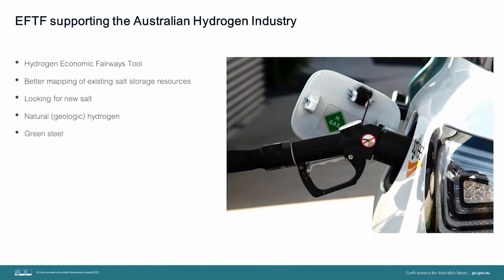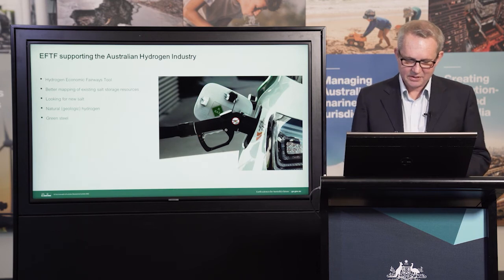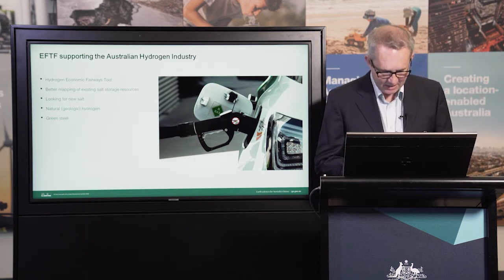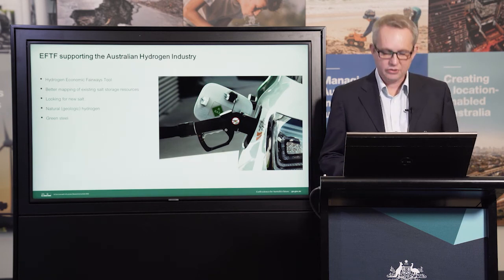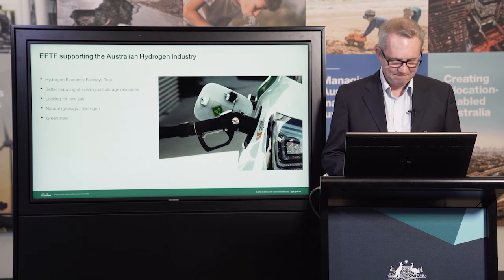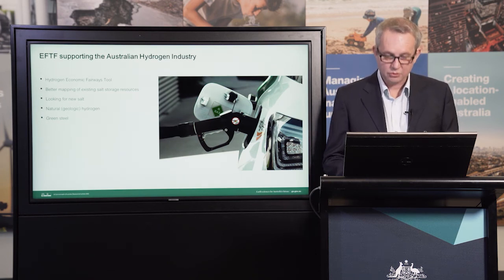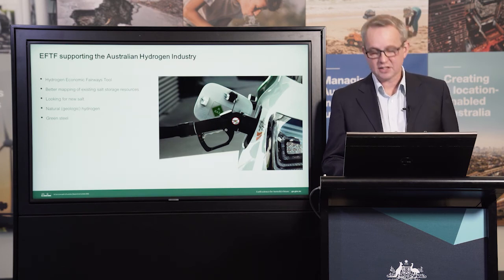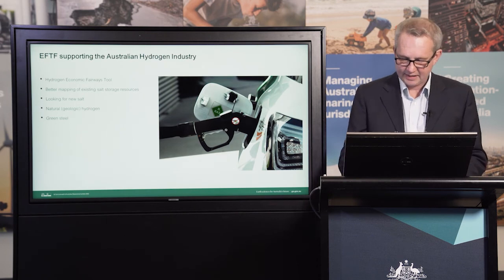These areas include geospatial economic analysis through our hydrogen economic fairways tool, better mapping of underground salt resources and looking for new ones — salt is key for large-scale underground hydrogen storage. We are also interested in natural or geologic hydrogen, a potentially cheaper source of hydrogen that could supplement manufactured hydrogen. This is a very new and interesting area of research and little is known about the extent of this resource. We have an extensive field program planned for 2022-2023. Finally, green steel: with lots of iron ore and good hydrogen potential, green steel is the next logical step.